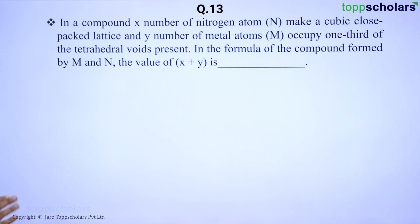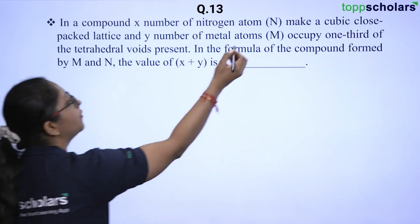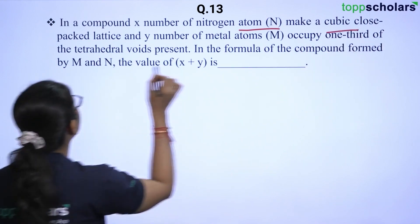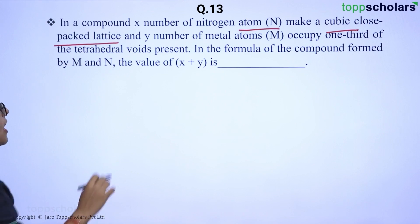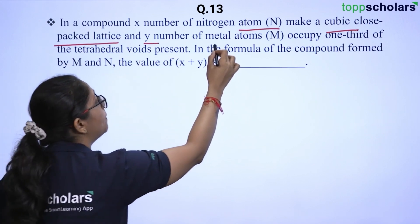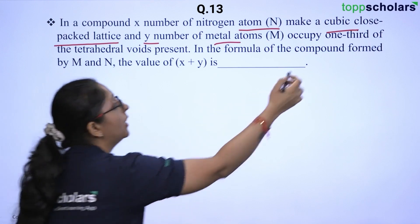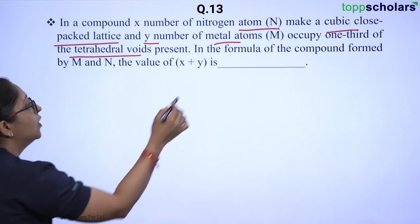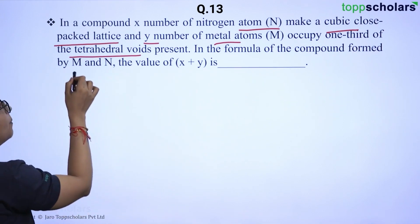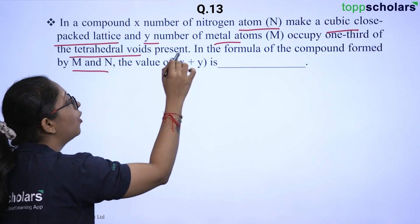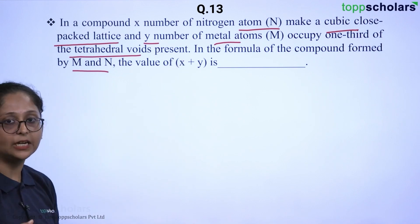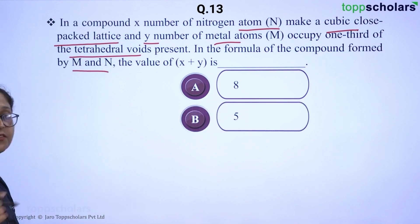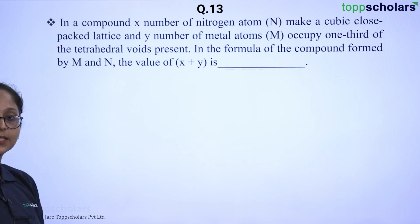The question is: there is a compound X where N number of nitrogen atoms make a cubic close packed (CCP) lattice, and Y number of metal atoms occupy one-third of the tetrahedral voids present in it. We have to use the formula for the compound formed by M and N and determine the value of X plus Y. The four options are: A is 8, B is 5, C is 4, and D is 2.